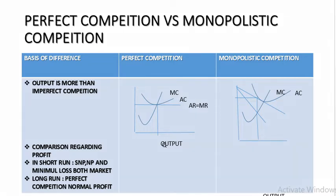Output is more under perfect competition because AR equals MR; AC and MC determine the equilibrium. Under monopolistic competition, the firm stops production before reaching the minimum point of average cost. So output under monopolistic competition is less than under perfect competition — because under perfect competition, production is at the least possible cost, that is the minimum point of average cost.